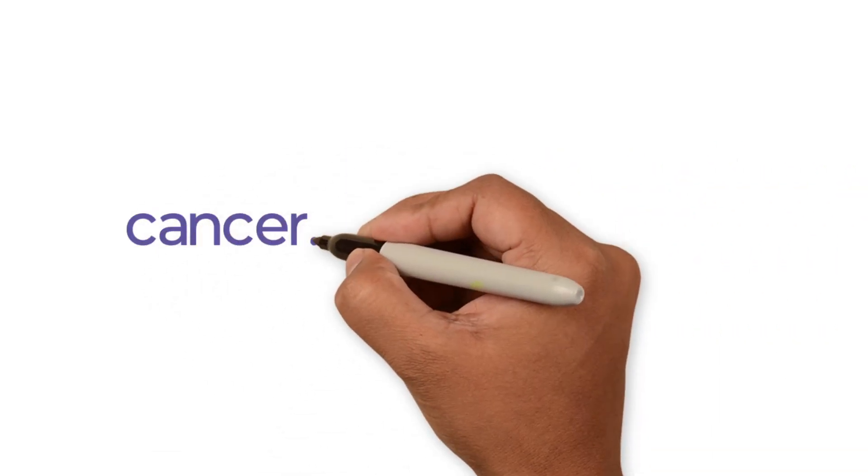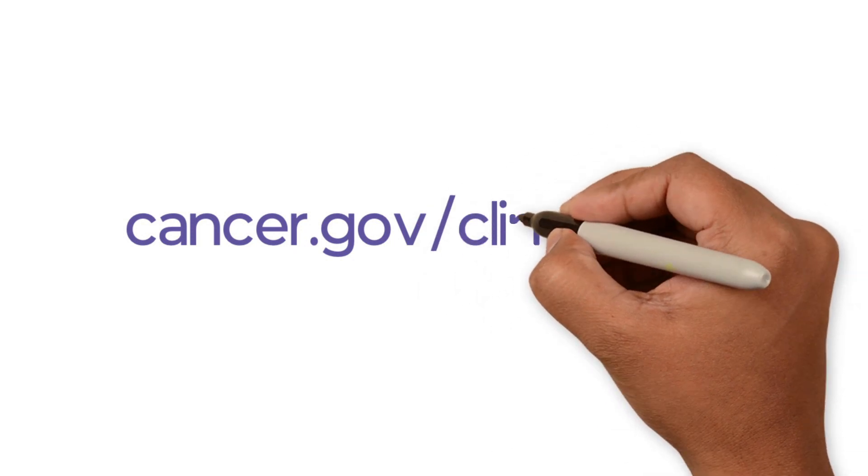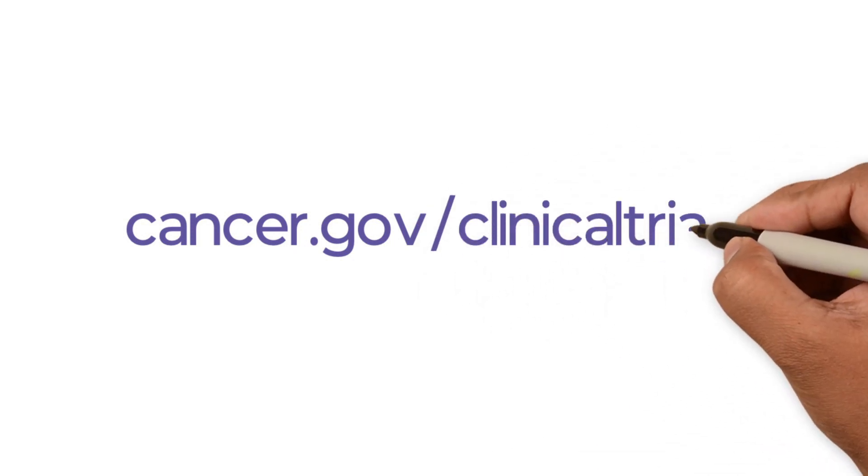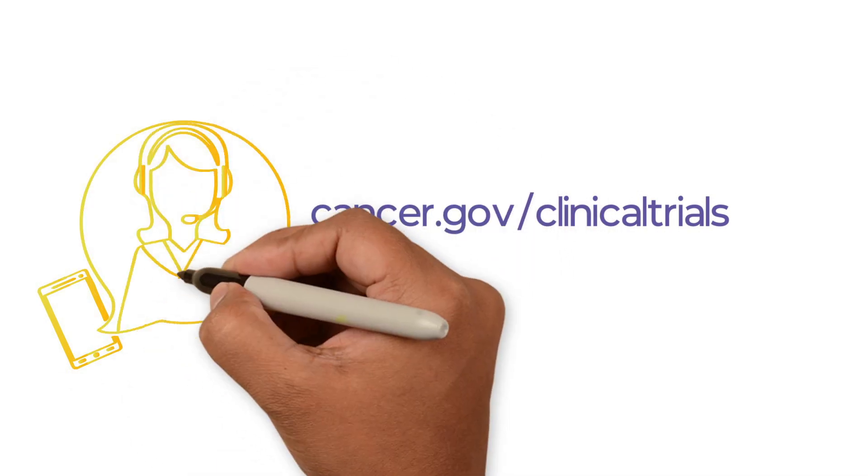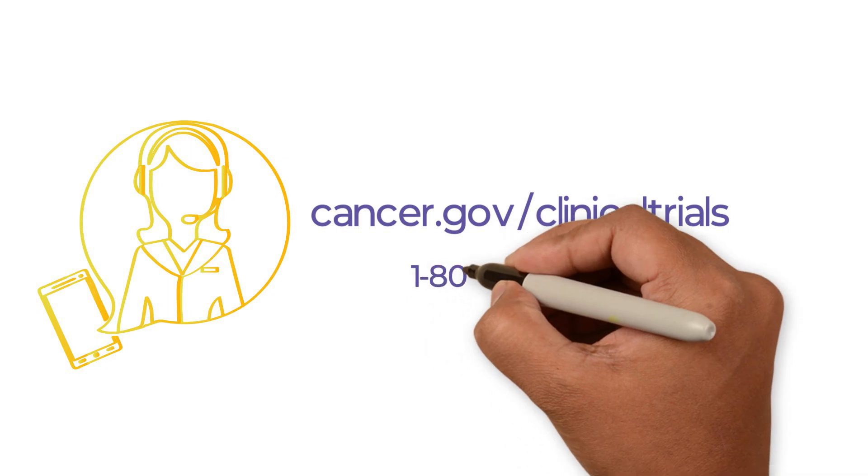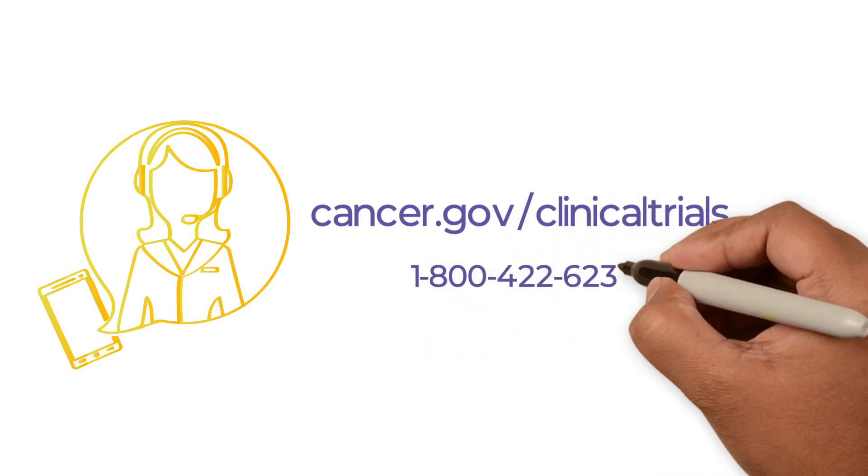To learn more about what trials are and how they work, go to cancer.gov/clinicaltrials. If you have further questions or want help finding a clinical trial, call the National Cancer Institute's Cancer Information Service at 1-800-422-6237.